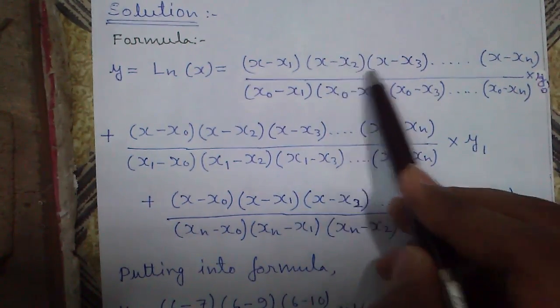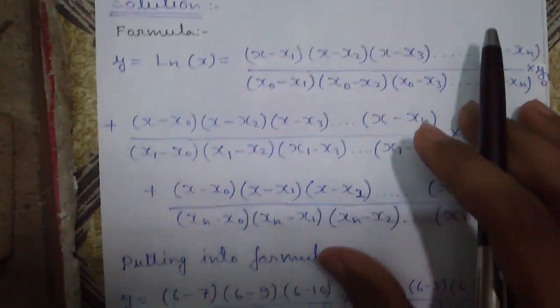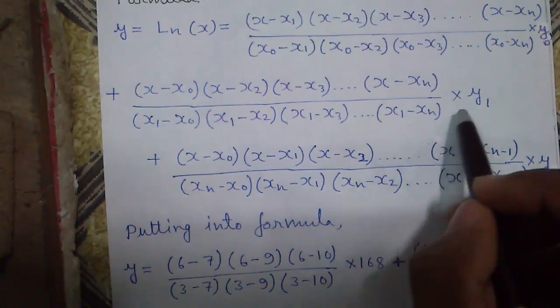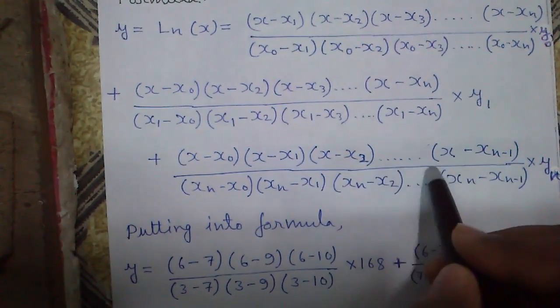Here x0 was missing so we multiplied with y0. x minus x0 is there, x1 is there, x2 is there and so on. This is the last term going on.